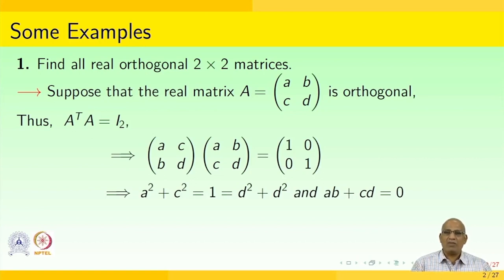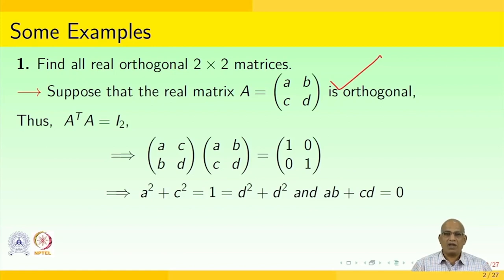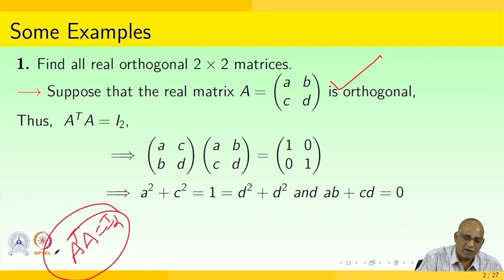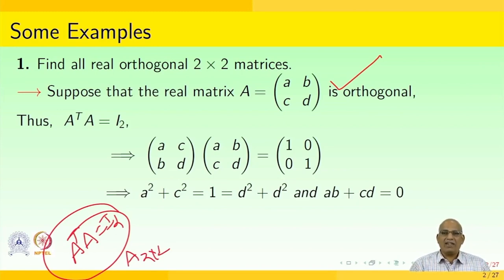Find all real orthogonal two by two matrices. Suppose that the real matrix A equals [a, b; c, d] is orthogonal. Thus we can write it as A transpose times A equals I₂, because A is a two by two order orthogonal matrix. So A transpose times A is equivalent to I₂, which implies A is [a, c; b, d] and A transpose is [a, b; c, d]. Multiplying these two matrices we need to get the identity [1, 0; 0, 1].